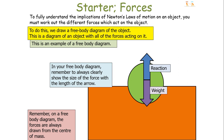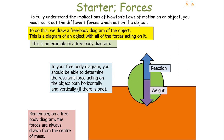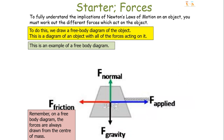You can show the size of the force with the length of the arrow. In this example both arrows are the same length, so they must be equal in size. It's also appropriate to show the type of force with an appropriate label — so we know the force acting upwards is the reaction force. From your free body diagram you should be able to determine the resulting force, if there is one, acting on an object both horizontally and vertically, as shown with the four forces on this particular object.